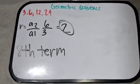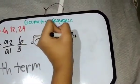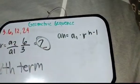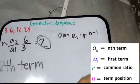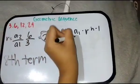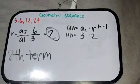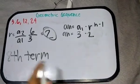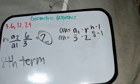Isusulat natin ang formula ng geometric sequence: a sub n, that's the last term, equal to a sub 1 times r to the power of n minus 1. The a sub 1 is the first term, r is for ratio, and n is the number of terms. So, a sub n equals a sub 1 which is 3, times the common ratio 2, raised to the exponent n minus 1. Ang n natin ay 8 dahil pang walong term ang hinahanap natin.